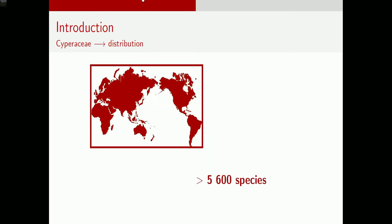Where are the Cyperaceae? Apart from Antarctica, they're all over the place. Especially common is the genus Carex in temperate climates. In our recent publication we gave a figure of 5,600 species and it's growing, so there's a lot of taxonomy happening — it's a very active working group.